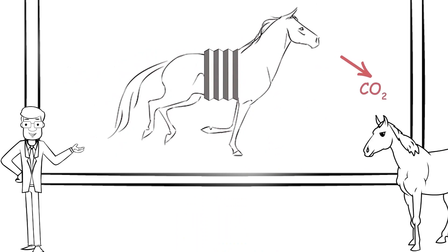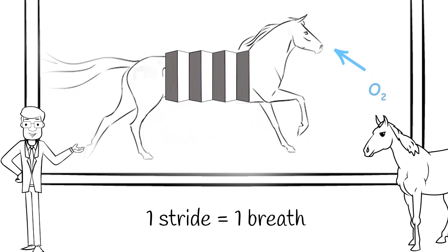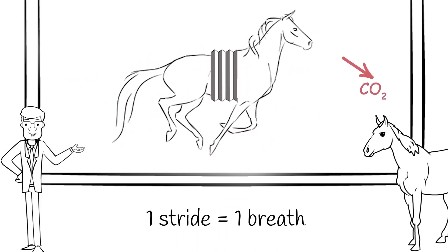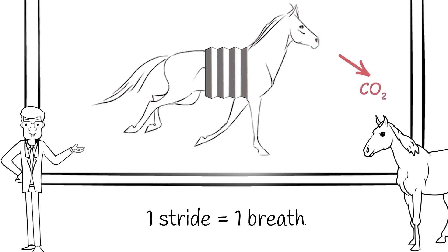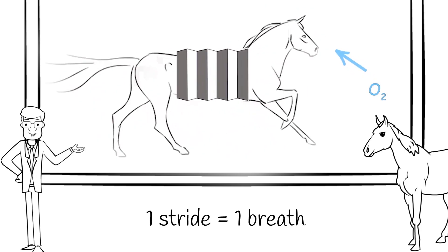When running, you can think of a horse as a giant bellows pulling air into and out of its lungs with each stride, about 120 to 140 times per minute.